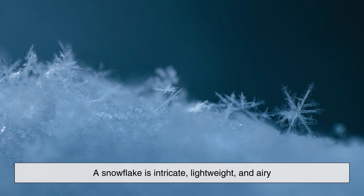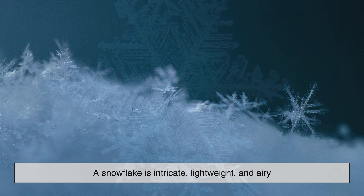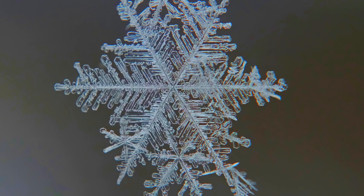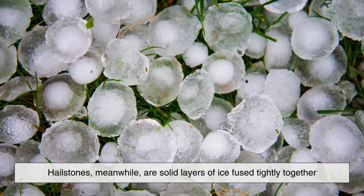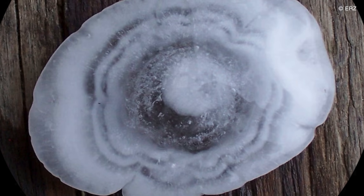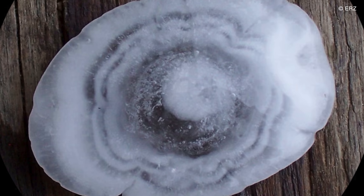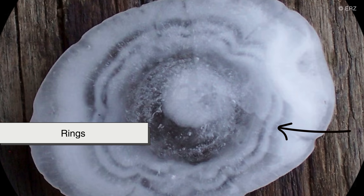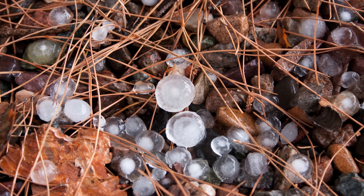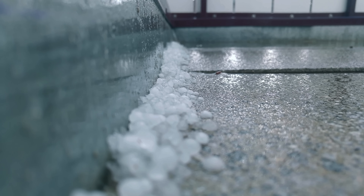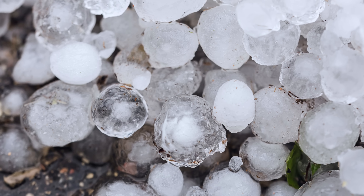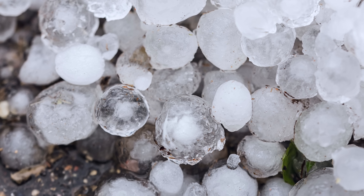Another huge difference between hail and snow lies in their structure. A snowflake is intricate, lightweight, and airy — look at one closely and it resembles a tiny crystal sculpture. Hailstones, meanwhile, are solid layers of ice fused tightly together. If you were to cut open a hailstone, you'd often find rings, just like a tree trunk, showing the history of how many times it was lifted and frozen inside the storm. Each ring tells the story of a cycle through the cloud, which is why some hailstones become so surprisingly large.